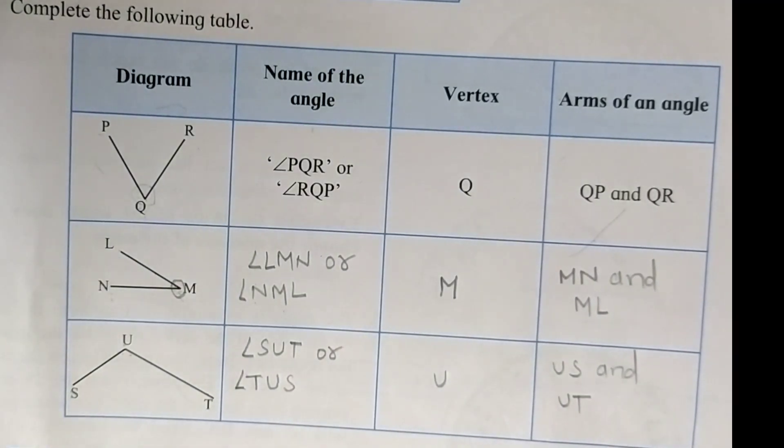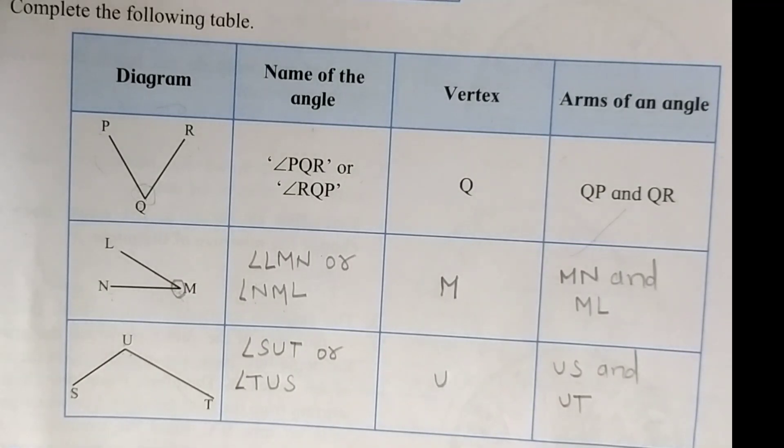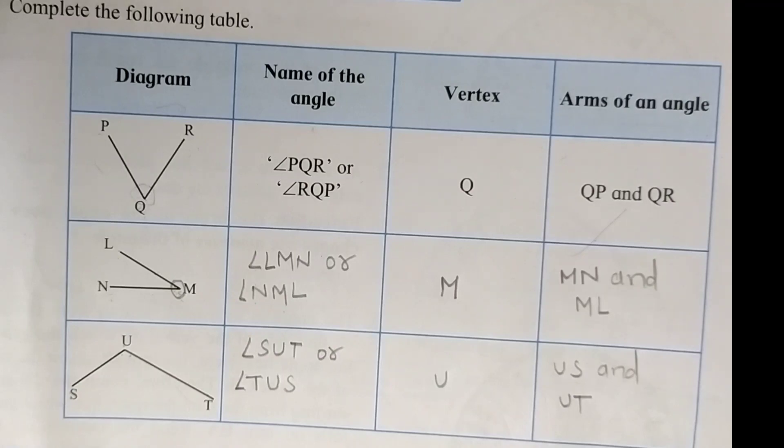Look, it's very easy. This is the solution for our problem set 24. Just draw this table in your notebook and solve it. Take another examples and find out the name of given angle, vertex in it, and the names of arms of an angle.